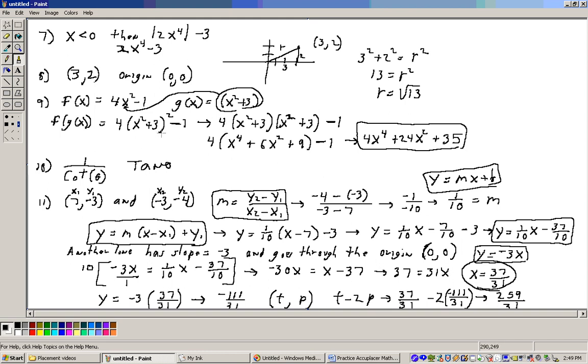Now, that would be 4 times (x squared plus 3). That quantity squared means x squared plus 3 times another x squared plus 3. And then we'll have to subtract off 1. This would need to be foiled together. So x squared times x squared is x to the 4th. x squared times 3 is 3x squared. And 3 times x squared is another 3x squared, giving us 6x squared. And 3 times 3 is 9.